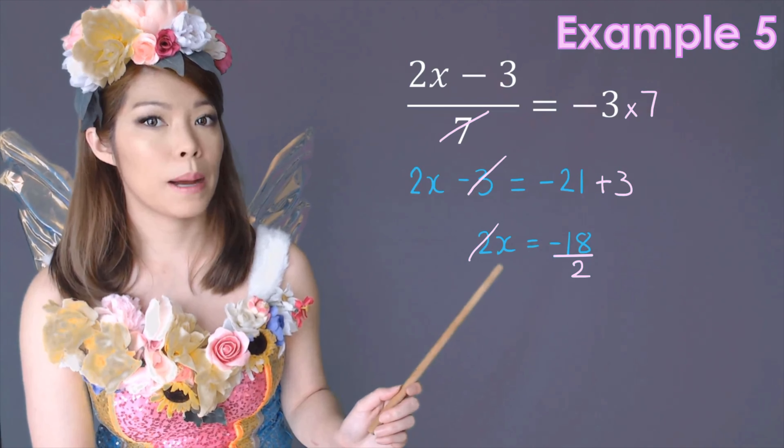Substitute it back in and check. In future tests, you won't need to write all of this out. You'll look at the question and say: 4 times 4 is 16, then 6 minus 16 is minus 10, and minus 10 divided by 5 is minus 2. You can see that's minus 2 on the right-hand side, so you'll know you're correct and keep going. But for now, make sure you write it all down so you can show that you know how to check.